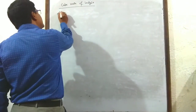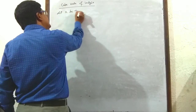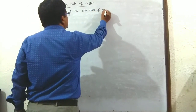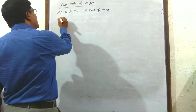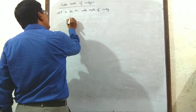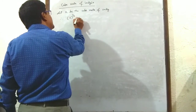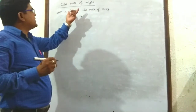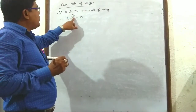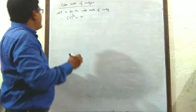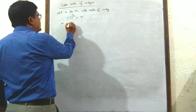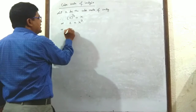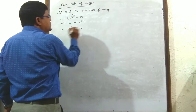Let x be the cube roots of unity. Therefore, 1 to the power 1/3 equals x. Cubing both sides, we get 1 equal to x cubed, or x³ - 1 = 0.